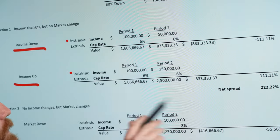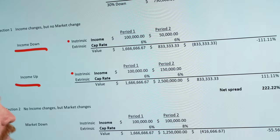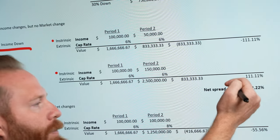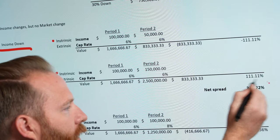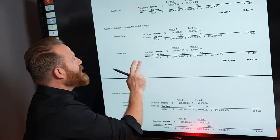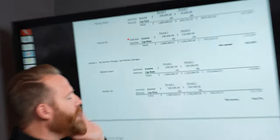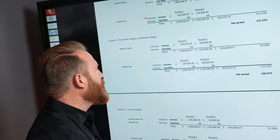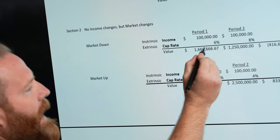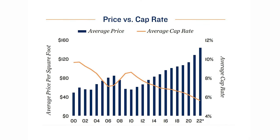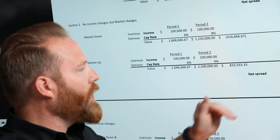But the income does. The income goes down and the income goes up. You see an exact correlation. $100,000 to $50,000, income went down. $100,000 to $150,000, income goes up. It's exactly correlated. Minus 111% up 111%. That spread is 221%. Makes sense. Where things start to get different. Let's say there are no income changes, but the market changes. So the market goes down a 6 cap to an 8 cap. Remember cap rates going up means prices are going down.